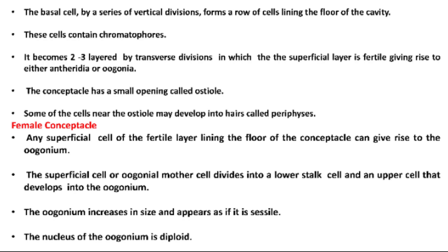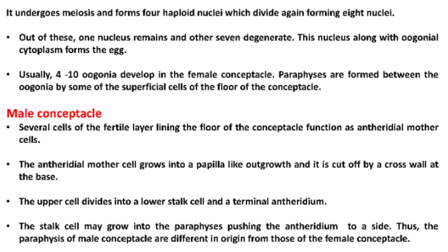The oogonium increases in size and appears as if it is sessile. The nucleus of the oogonium is diploid. It undergoes meiosis and forms four haploid nuclei, which divide again forming eight nuclei. Out of these, one nucleus remains and the other seven degenerate. This nucleus along with the oogonial cytoplasm forms the egg. Usually four to ten oogonia develop in the female conceptacle. Periphyses are formed between the oogonia by some of the superficial cells of the floor of the conceptacle.